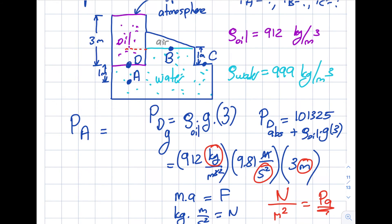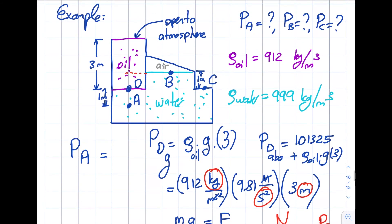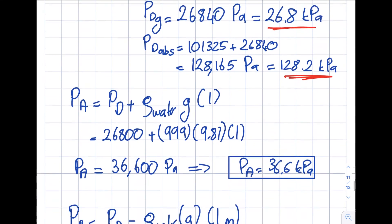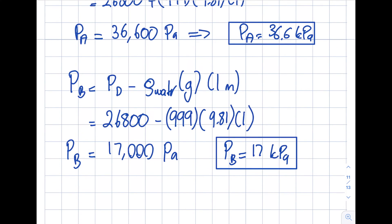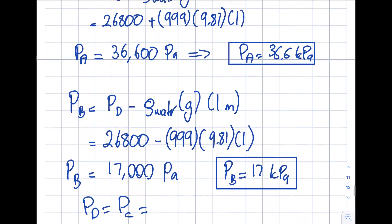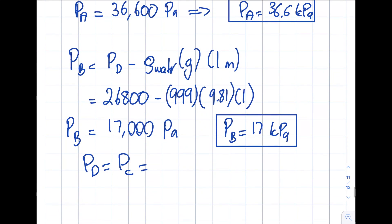Finally, let's find PC. You might think: it's at the corner, and it's open to atmosphere on one side, so maybe PC is zero or atmospheric. No — you're looking at the wrong surface. The surface we're asked about is on the other side. Going down to that level, PC equals PD, which is 26.8 kilopascals.